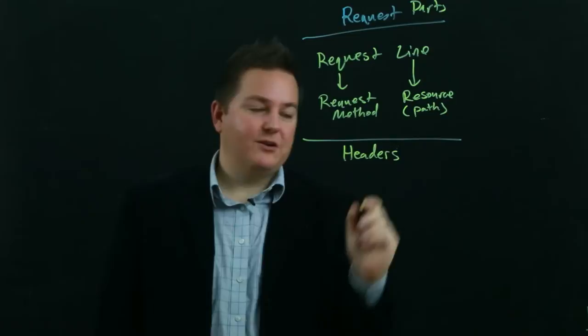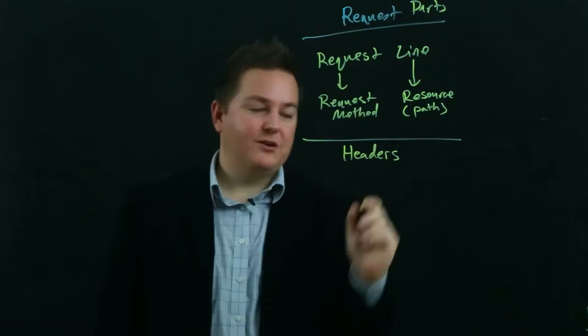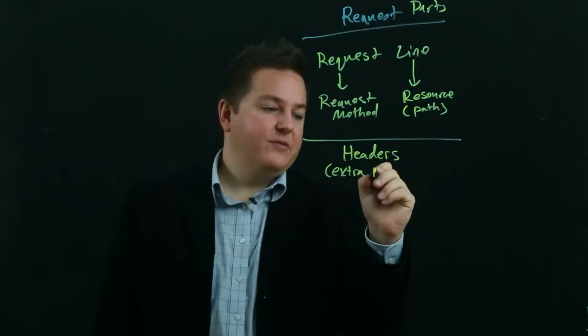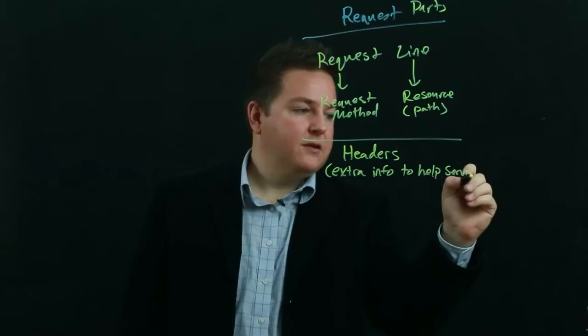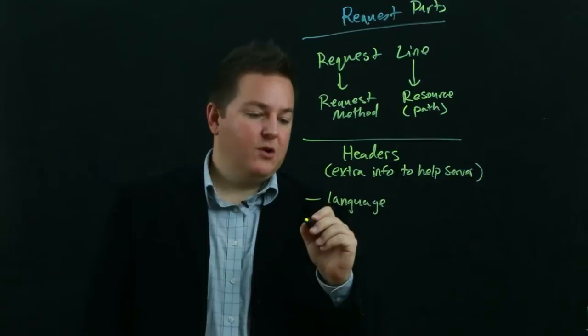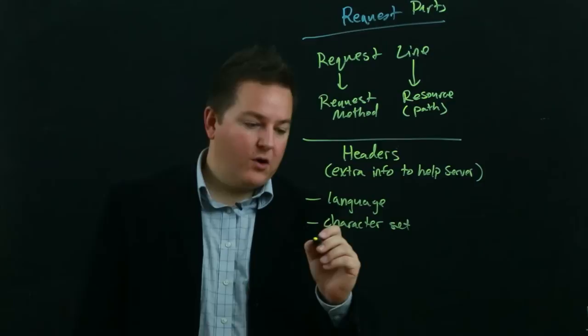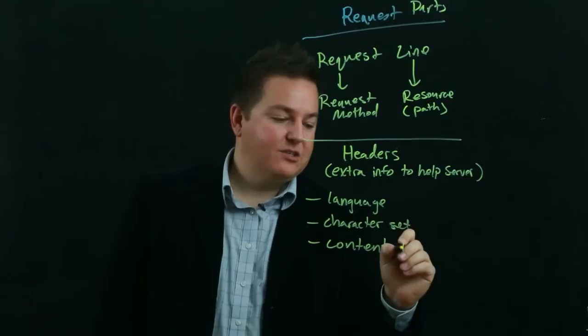So the next piece of the request is a series of headers. And what we can think of these is extra information to help the server. And these are things like the language that we would like the response to come back in, or the character set that we would like to see the response in, or the content type, what we're sending back to the client so it knows how to interpret it and process it.